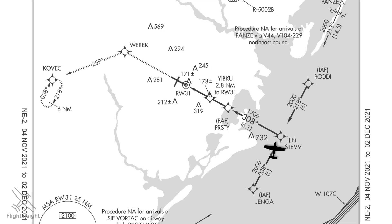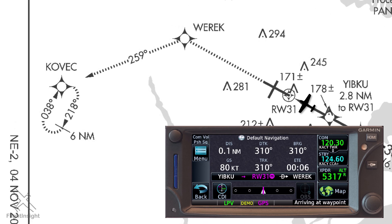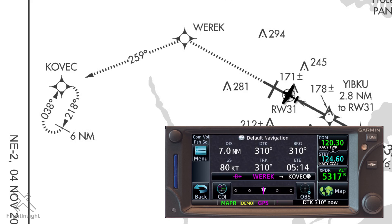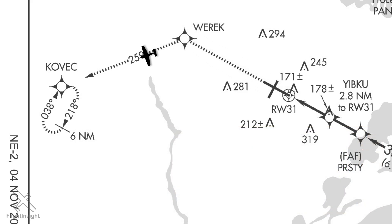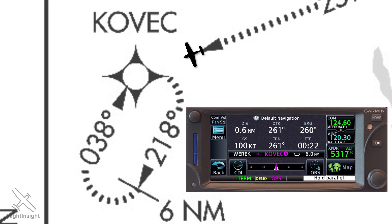Let's move up to the point we're about to reach the runway and say that we don't have it in sight and need to go missed. Just prior to the waypoint we'll see it announced on the bottom right. As we cross over, the GPS wants to know if we landed or need to go missed. After having executed our missed approach procedure and climb out, we'll tap activate GPS missed. It'll now have us fly direct to Weric, the first point on the missed procedure. Here we are approaching the holding fix, COVEC. As we approach, the GPS will announce our holding entry is parallel — which makes perfect sense from the direction we're coming.